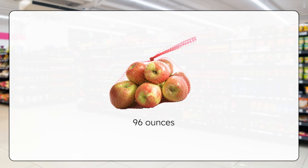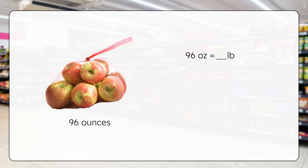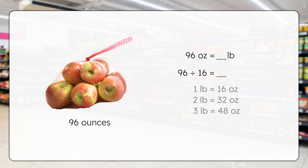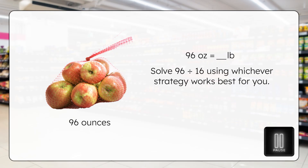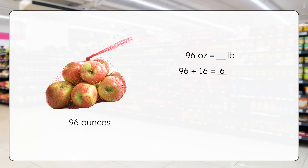Moving on to this bag of apples — it weighs 96 ounces. How many pounds is that? To go from ounces to pounds, we divide by 16. Since we haven't done a lot of dividing by two-digit divisors, another way you could figure this out is by using the multiples of 16. Since 1 pound equals 16 ounces, you can follow the pattern: 1 pound is 16 ounces, 2 pounds is 32 ounces, 3 pounds is 48 ounces, and so on until you reach 96. Pause here to solve 96 divided by 16 in your guided notes using whichever strategy works best for you. 96 divided by 16 equals 6 pounds. The bag of apples weighs 6 pounds. And to check: 16 times 6 equals 96.